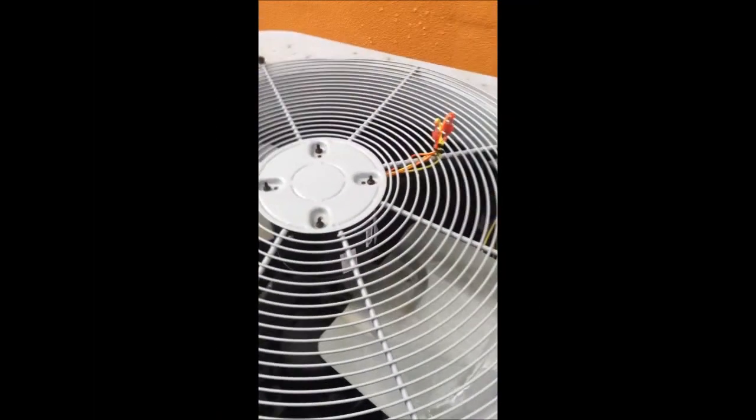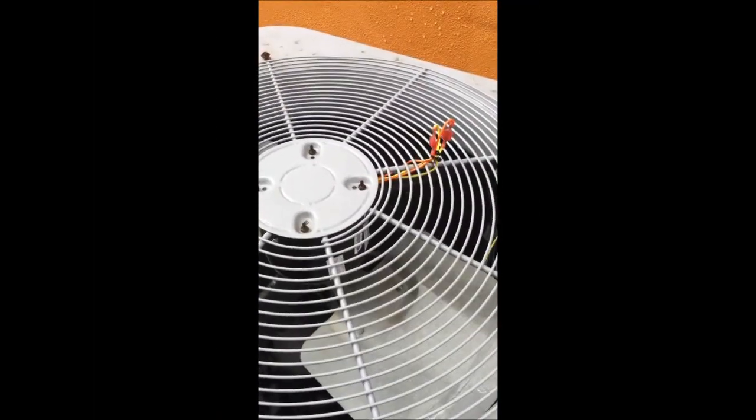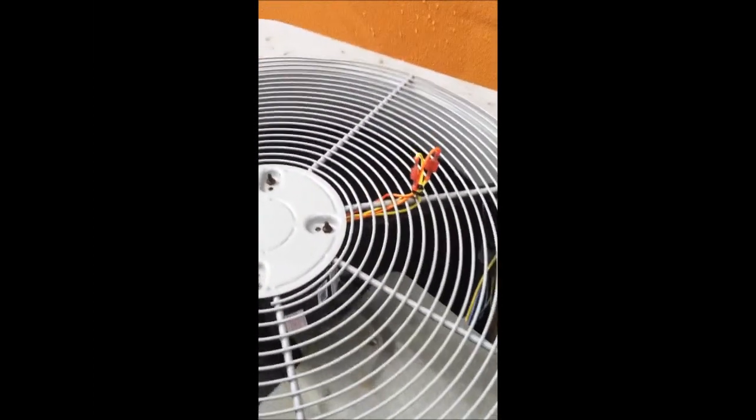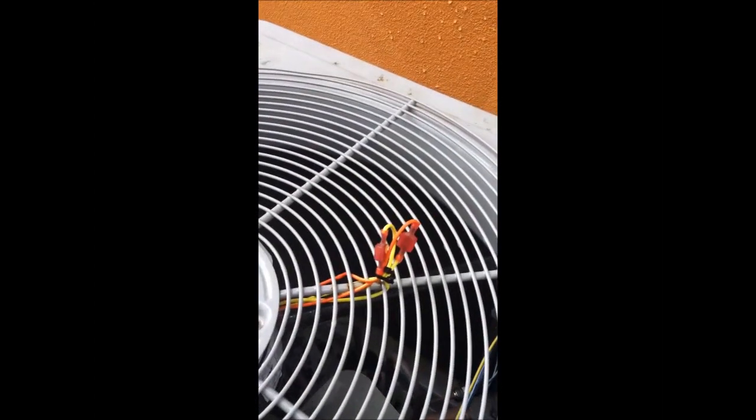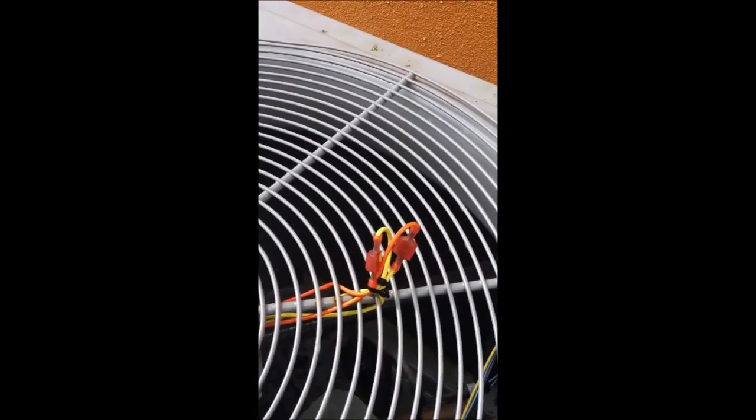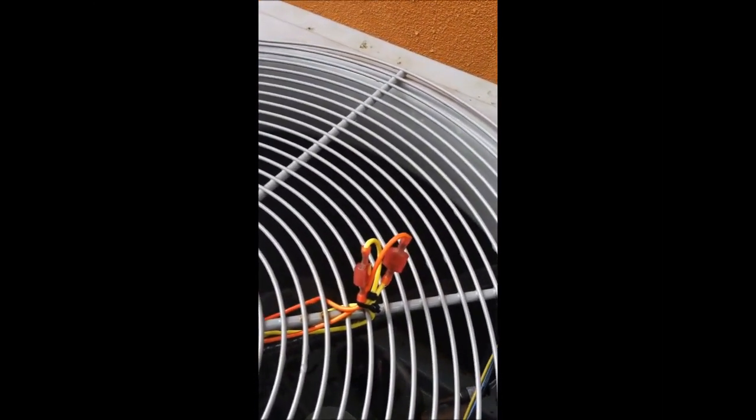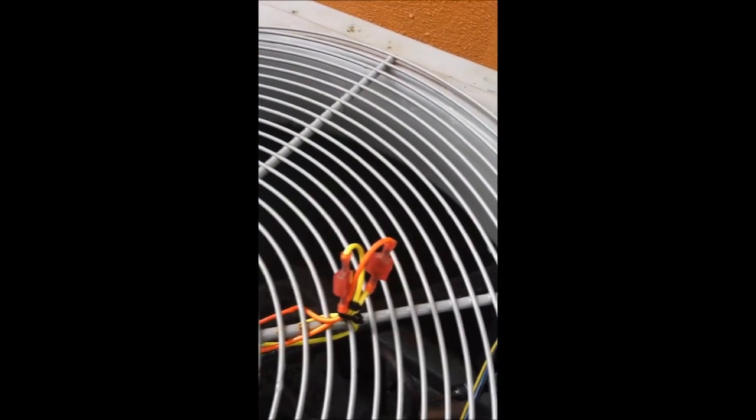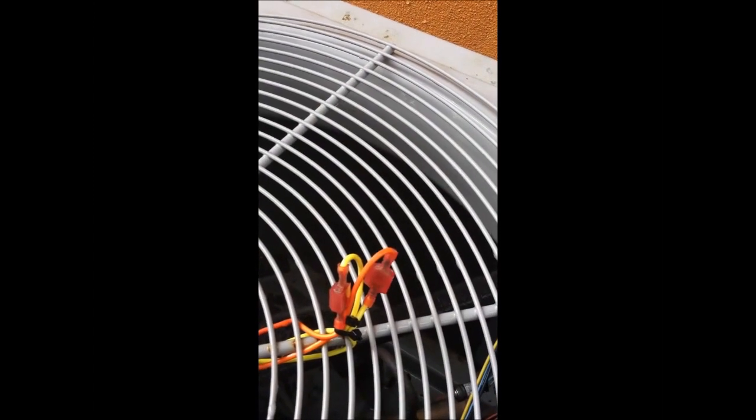All right, so I'm out here taking a look at a recently replaced condenser fan motor and this is a universal replacement. You can tell that because you see these orange and yellow leads. These allow the condensing fan to be switched from clockwise to counterclockwise. This is probably not a great idea to have them hanging out of the top of the condenser fan cage here.